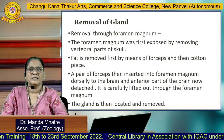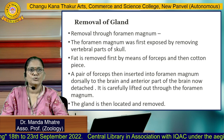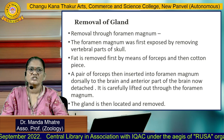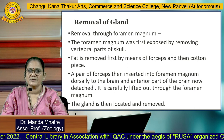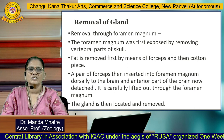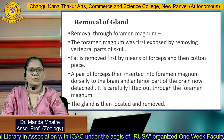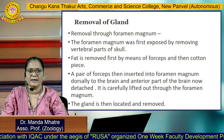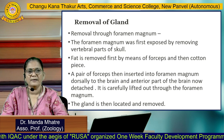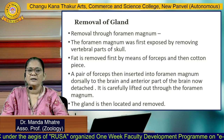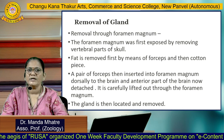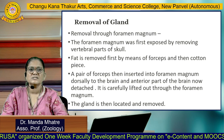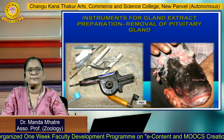At the time of removal of the gland, it can be removed through the foramen magnum. The foramen magnum is first exposed by removing the vertebral part of the skull. Fat is removed first by means of forceps, then a cotton piece. A pair of forceps is then inserted into the foramen magnum dorsally to the brain, and the anterior part of the brain is detached and carefully lifted out through the foramen magnum. The gland is then located and removed.